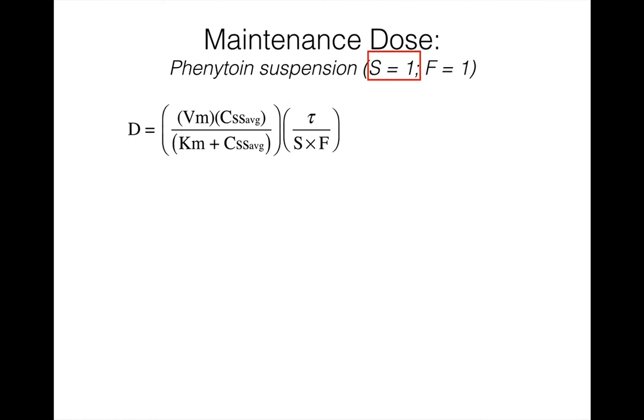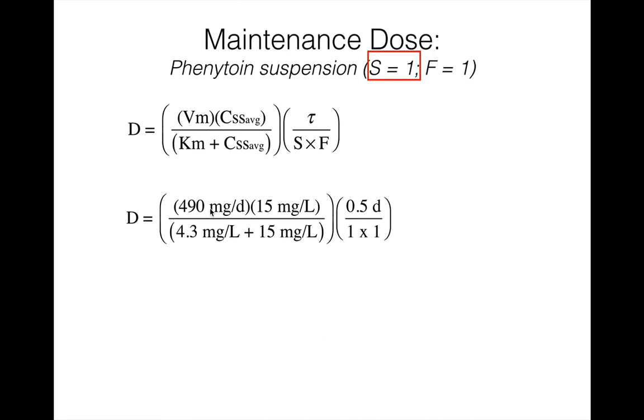Here's the formula we use to solve for the dose to produce the desired CSS average. We plug in 490 milligrams per day for Vmax, which is essentially the maximum amount of phenytoin that the body could get rid of in a given day, 15 milligrams per liter for CSS average, and 4.3 milligrams per liter for Km, the Michaelis constant. I've used 0.5 days for my dosing interval. The reason I use 0.5 days is so that I can cancel out the units from Vmax. I could convert Vmax to 490 milligrams per 24 hours and then use 12 hours here. Either way would allow us to eliminate the units appropriately. When I do the calculations, the dose equals 190.4 milligrams every 12 hours, and that would generally be rounded to 200 milligrams.